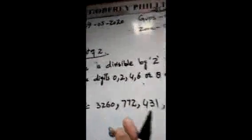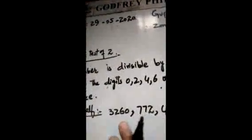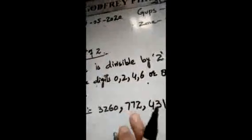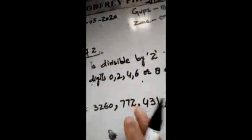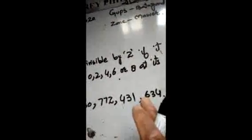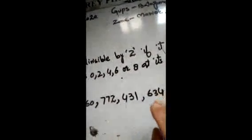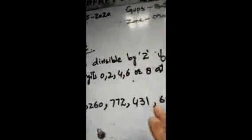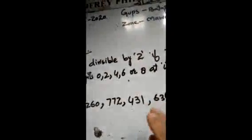Now here I have put some numbers for you. You have to say whether these are divisible by two or not. The numbers are: 3260, 772, 431, and 634. You have to encircle the numbers which are divisible by two. I hope you can answer this question. Assalamu Alaikum Warahmatullahi Wabarakatuh.